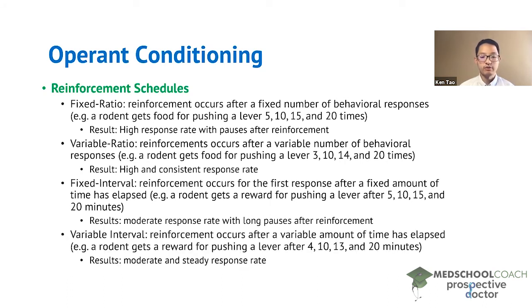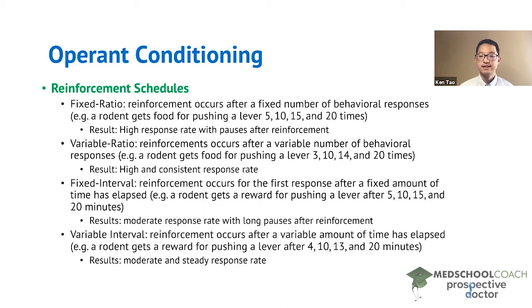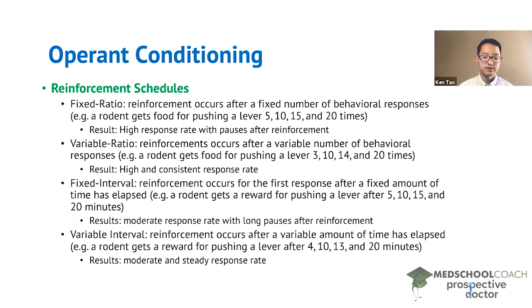Finally, we have variable interval. This is when the animal gets reinforcement after a variable amount of time has passed. For example, the rodent can get the reward of food after pushing the lever — maybe after 4 minutes, 10 minutes, 13 minutes, and 20 minutes. The rodent still has to wait, but they don't know how long — it could be 4 minutes, 10 minutes, 3 minutes, or 7 minutes. It's variable. In this case, you get a moderate and steady response rate.